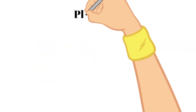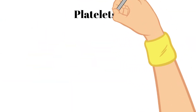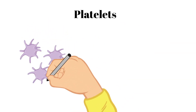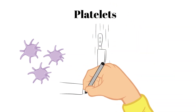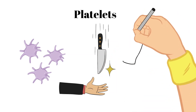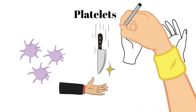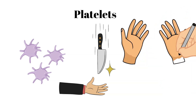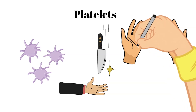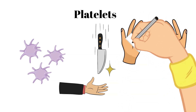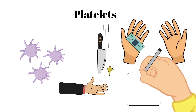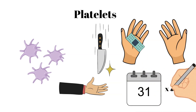Next are platelets — tiny cells that help in the clotting process. When a blood vessel breaks, platelets gather in the area and help seal off the leak. Platelets work with proteins called clotting factors to control bleeding inside our bodies and on our skin. Platelets survive about nine days in the bloodstream and are consistently being replaced by new platelets made in the bone marrow.